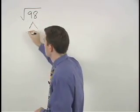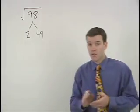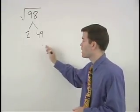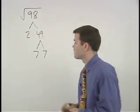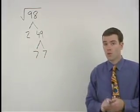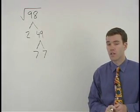98 is 2 times 49, and if you know your perfect squares you'll recognize 49 as 7 times 7. What we're looking for in our factor tree are pairs of factors that are the same.